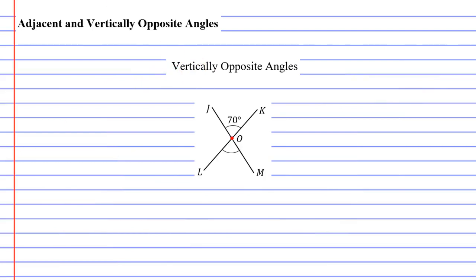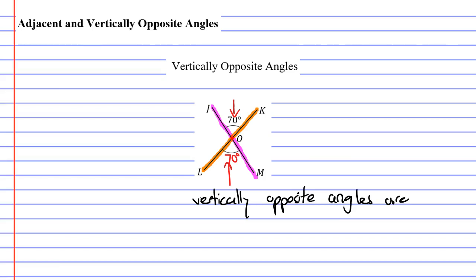Next, we're going to look at vertically opposite angles. You'll notice that you have two lines — line JM and line LK — and these two lines intersect at a point. When you get vertically opposite angles, the angles will be equal. The angle at the top is 70 degrees, and the angle opposite that, down below, is also 70 degrees. We say that vertically opposite angles are equal. Angle LOM must equal 70 degrees.